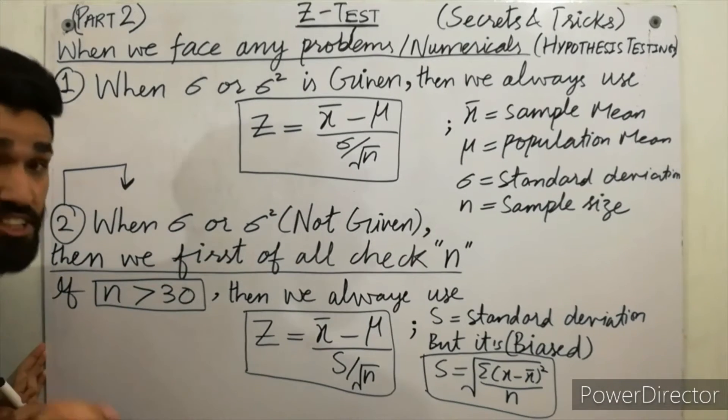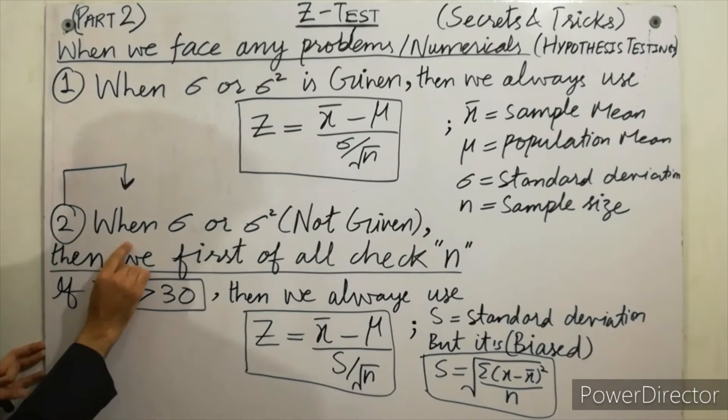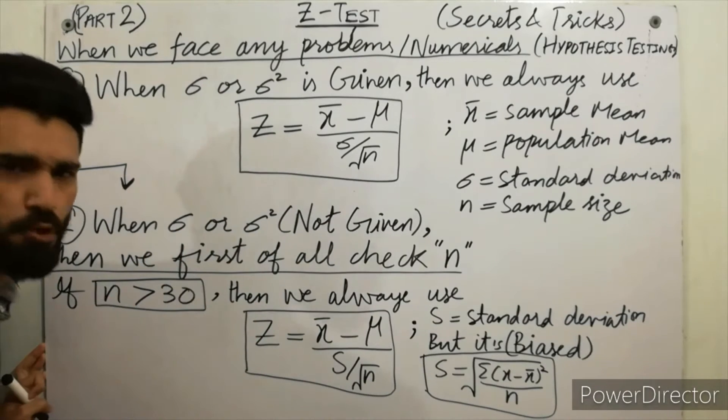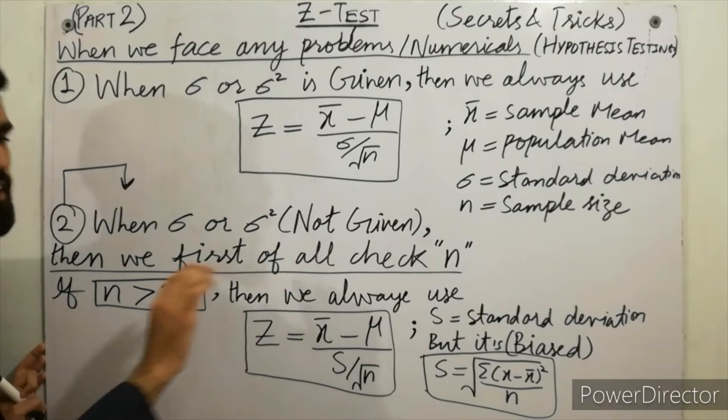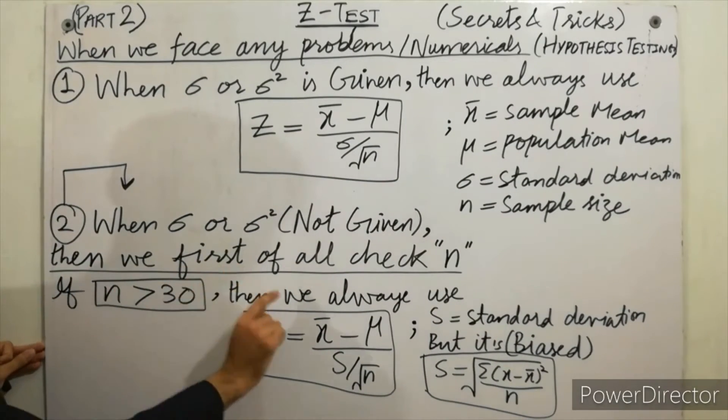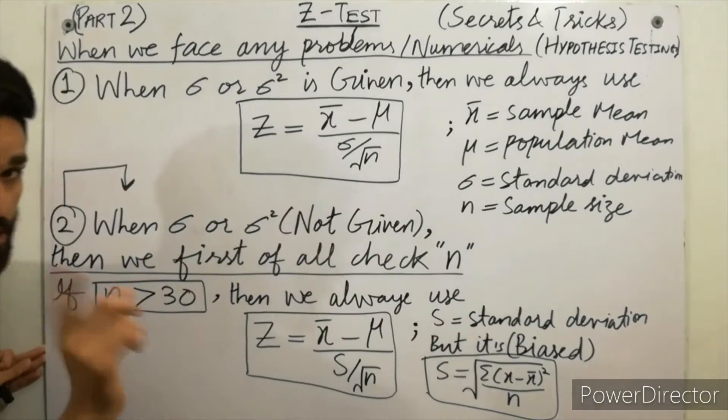It's very interesting when σ or σ² is not given. When there is any numerical problem where sigma squared is not mentioned, then we first of all check the sample size.